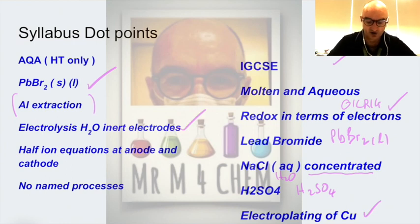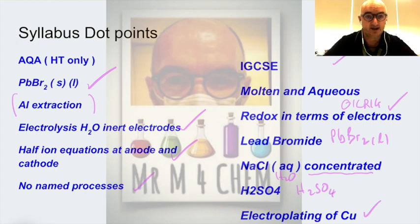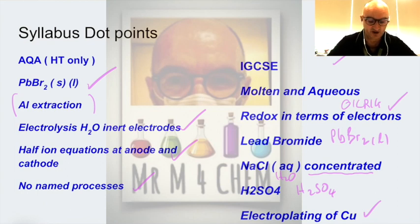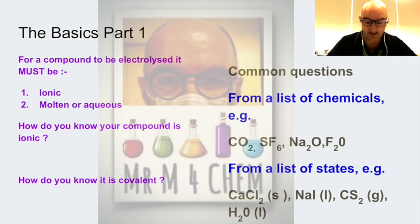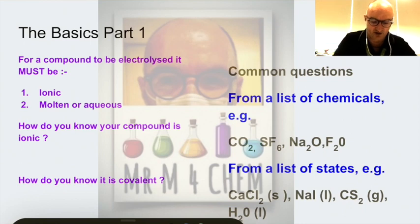The only real difference between the two syllabuses is aluminium extraction. If you're doing iGCSE, don't worry about aluminium unless you're doing the triple award. If you're doing AQA or iGCSE, all the other things apply to you. Hopefully you've printed off the notes — maybe now is the time to see if you can answer any questions before I go ahead and answer them for you.